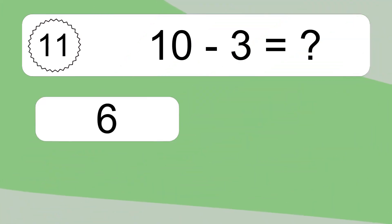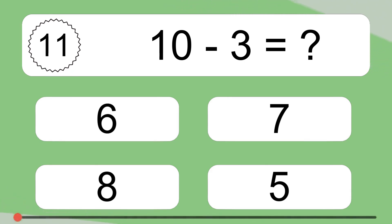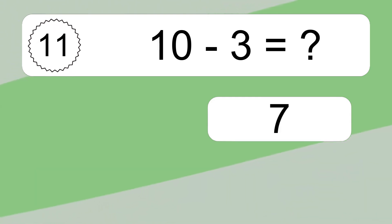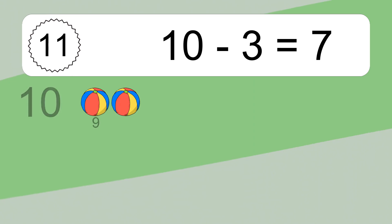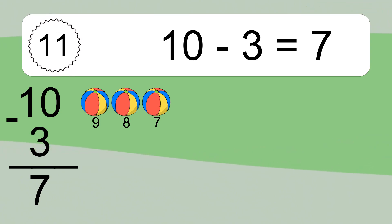10 minus 3 equals what? 10 minus 3 equals 7. Let's count it! 9, 8, 7.